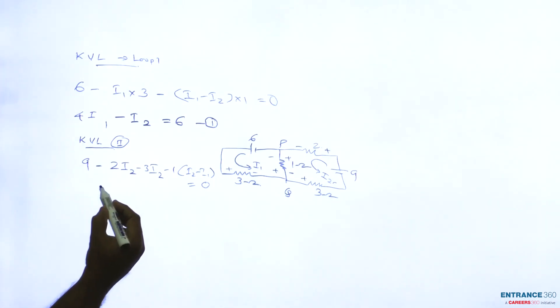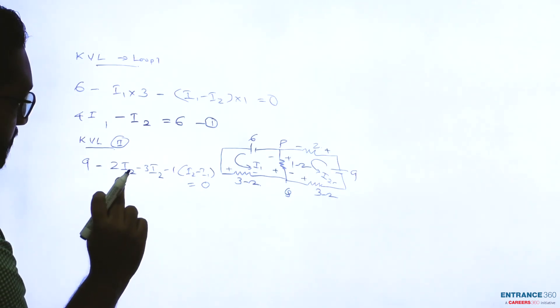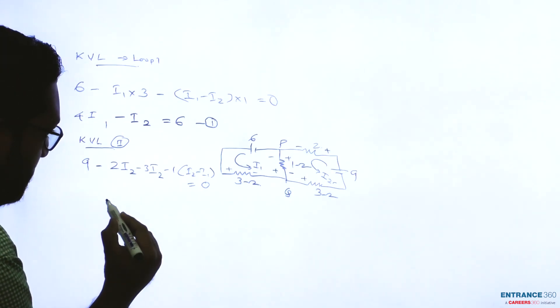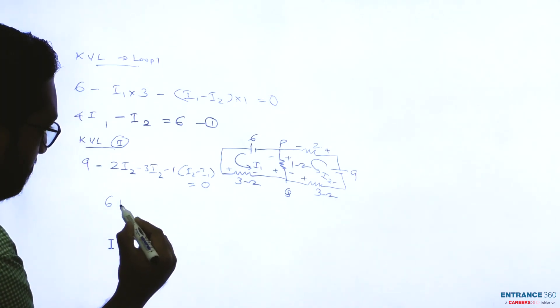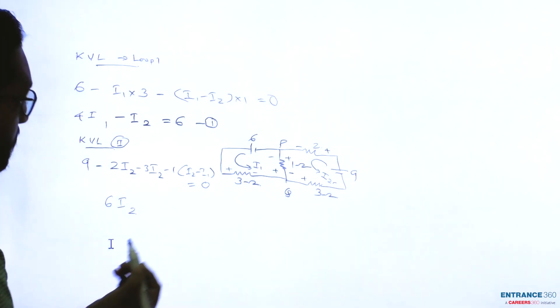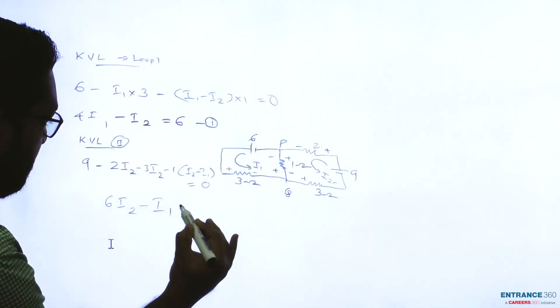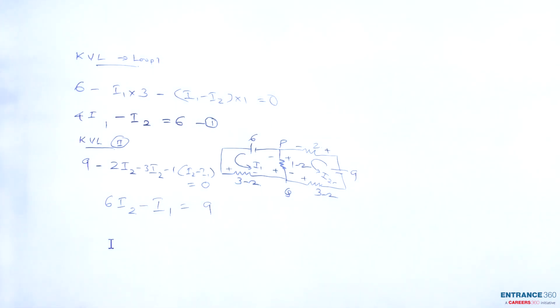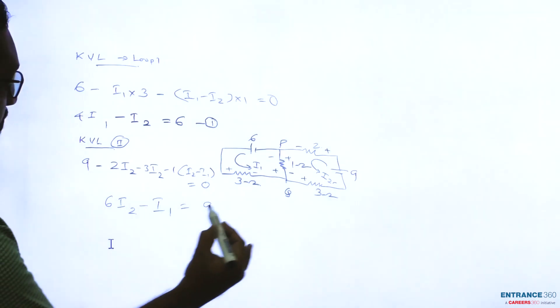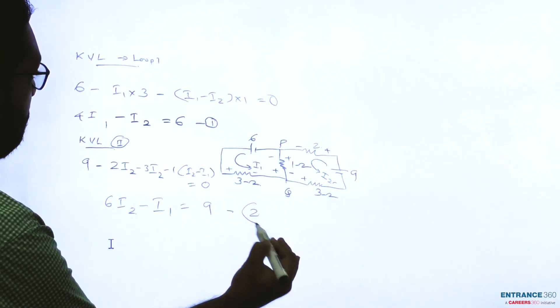So we can write 6I2 minus I2 minus I1 equal to 9, or say equation number 2.